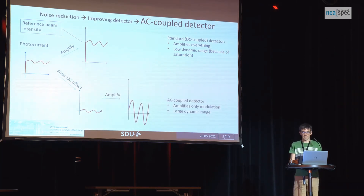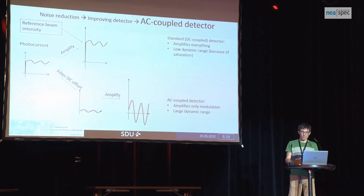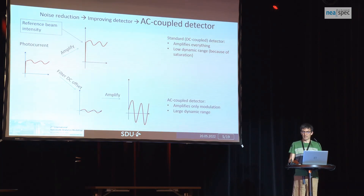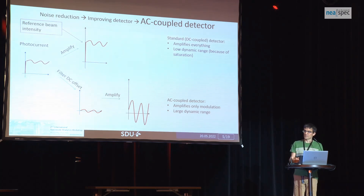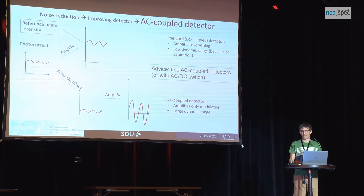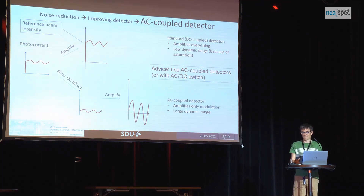Therefore, the solution is to use AC coupled detectors. First, it removes the large DC offset and only amplifies the variation in time — which in our case is the modulation introduced by the interference from scattering of the tip. With an AC detector, you have no issue with saturation because the interference term is very small. You can amplify as much as you want, until you reach the bandwidth limit. The advice is simple: use an AC coupled detector. And if you're lucky enough to find one with an AC/DC switch on the market, that's the best choice.